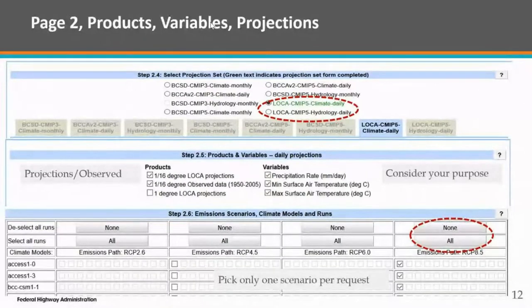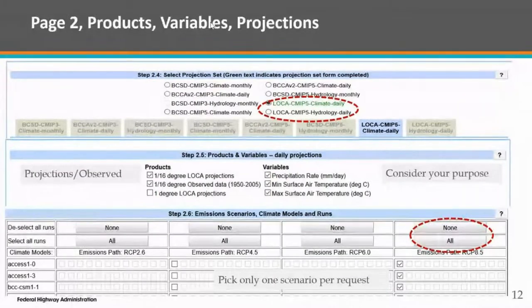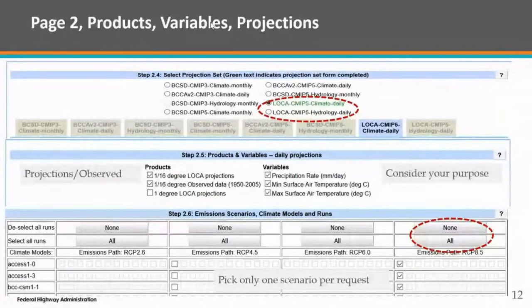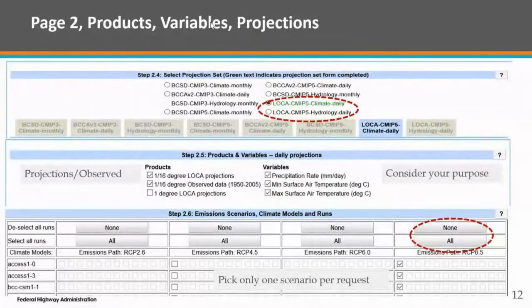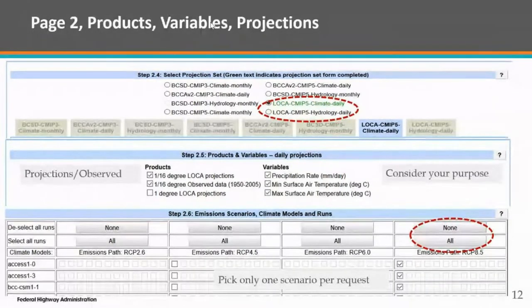The next step is picking what type of data you want. Under products and variables, daily projections, you see 1/16th degree LOCA projections and 1/16th degree observed data. Then you pick whether you want precipitation, minimum surface air temperature, or maximum surface air temperature. And then — here's that discussion we had earlier — what climate models do you want to run? What RCP scenarios do you want? If it's a very high-risk asset like an interstate that floods, you might pick 8.5 to be conservative; lower-risk assets are probably fine with 4.5.